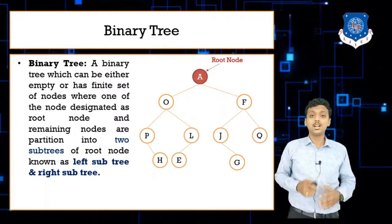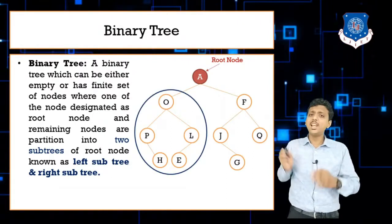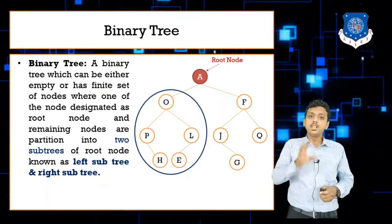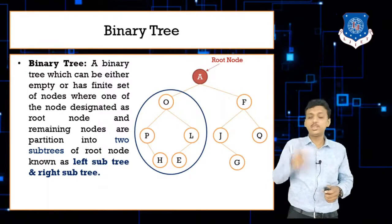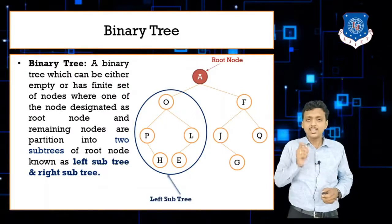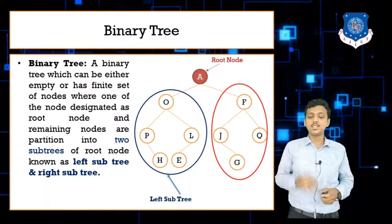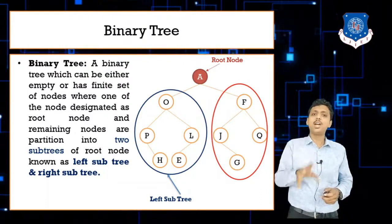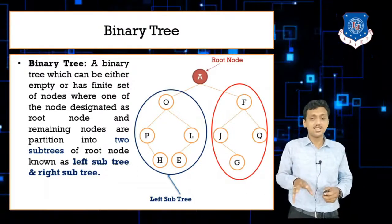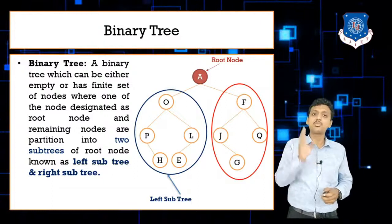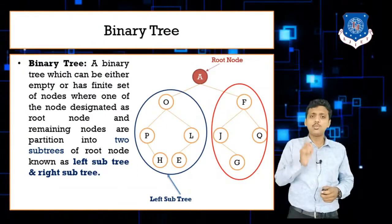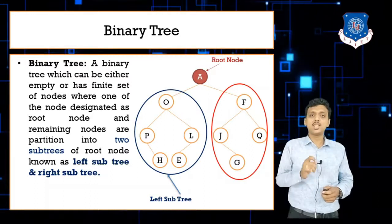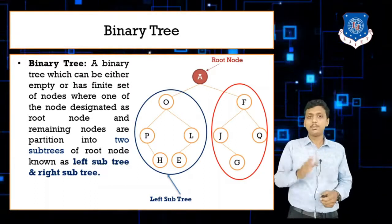In this figure, root node A has children O and F. The subtree rooted at O is called the left subtree, and the subtree rooted at F is called the right subtree. Remember: the number of subtrees equals the number of child nodes equals the degree of the node.